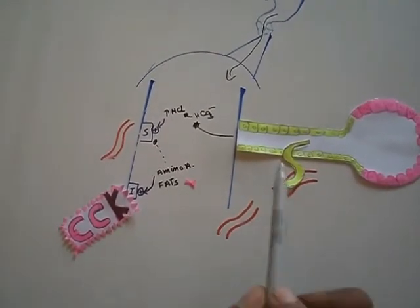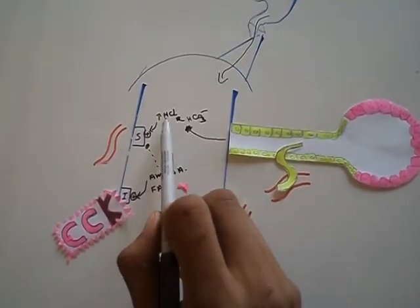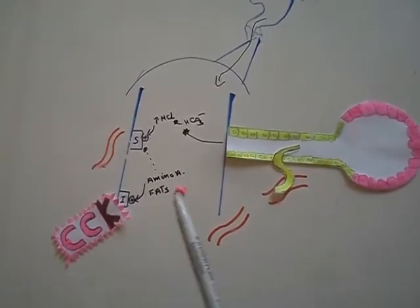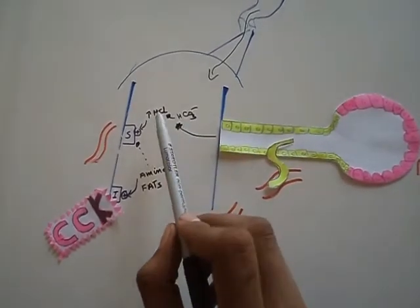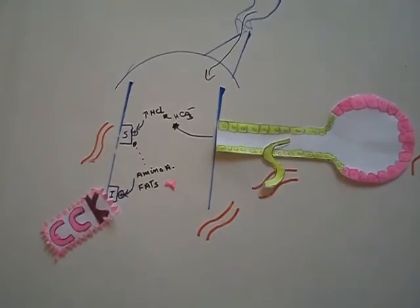Why? Because the main goal and the main stimulus for S-cells is the high HCl concentration. So the secretin will produce bicarbonate to neutralize the acidity, and the mission of secretin here is accomplished.